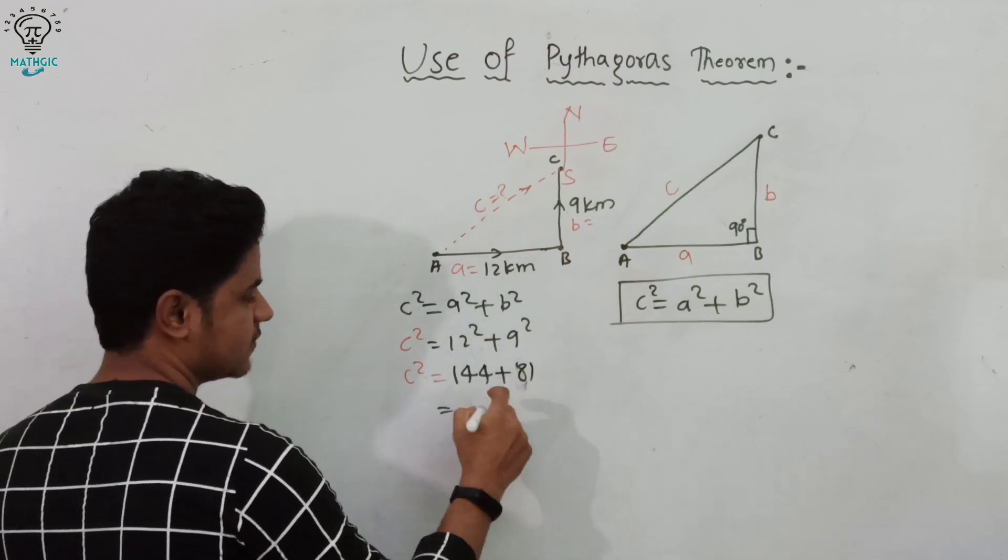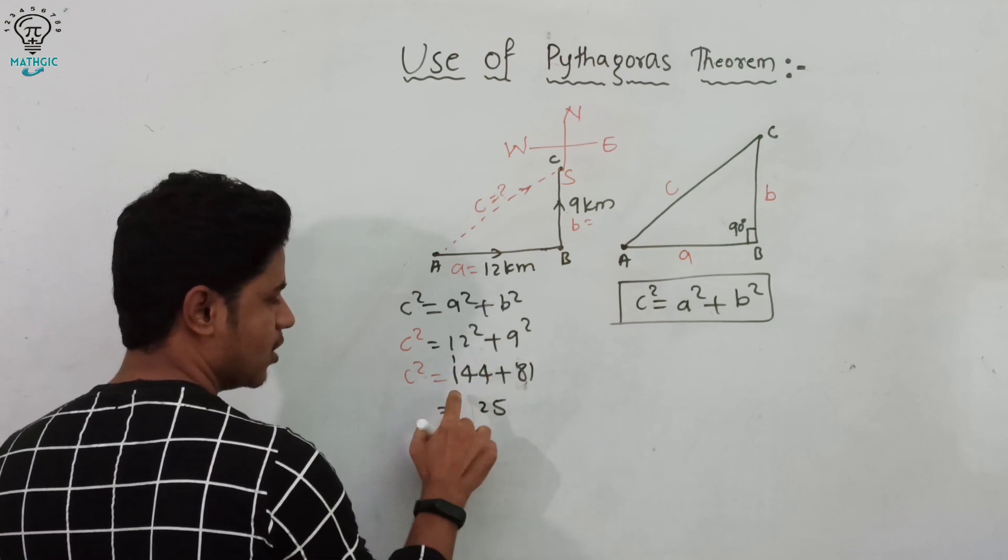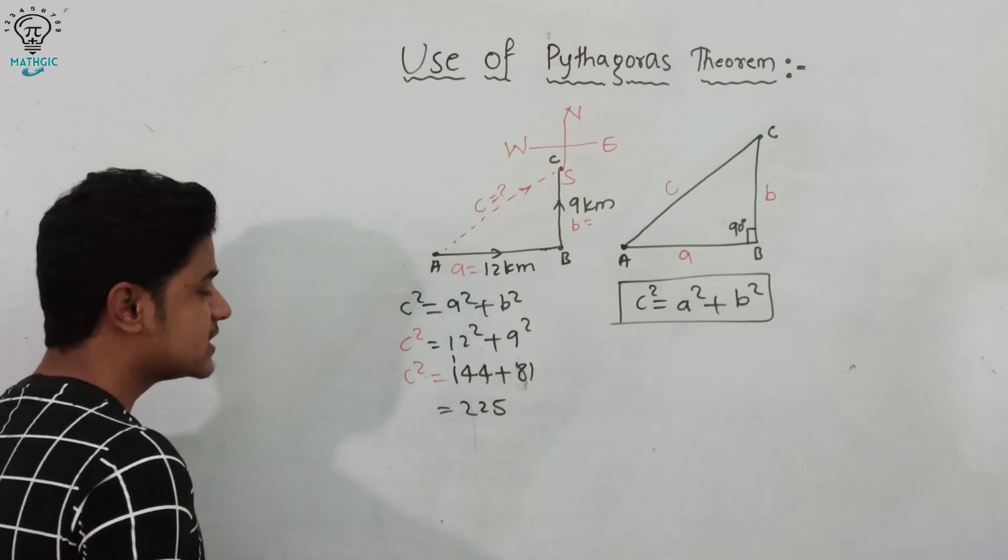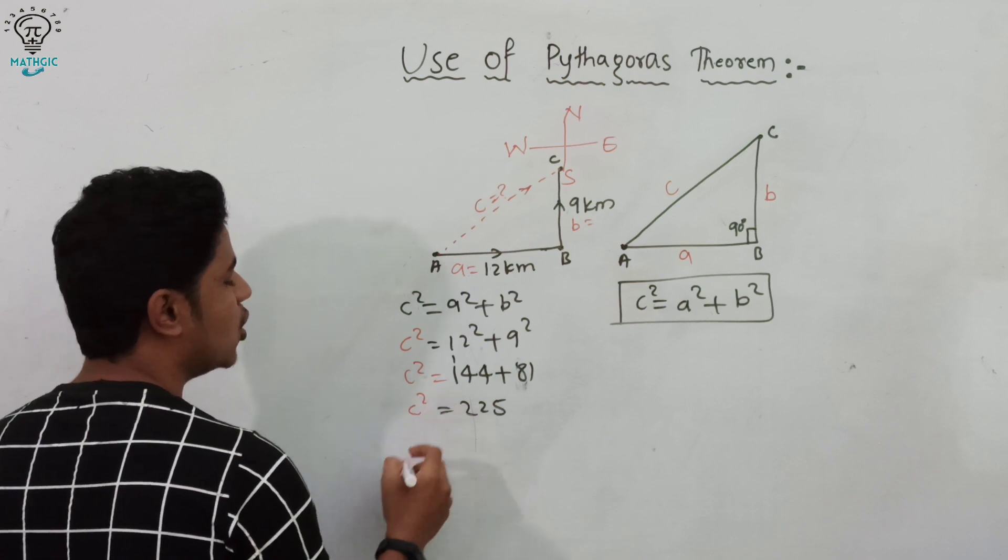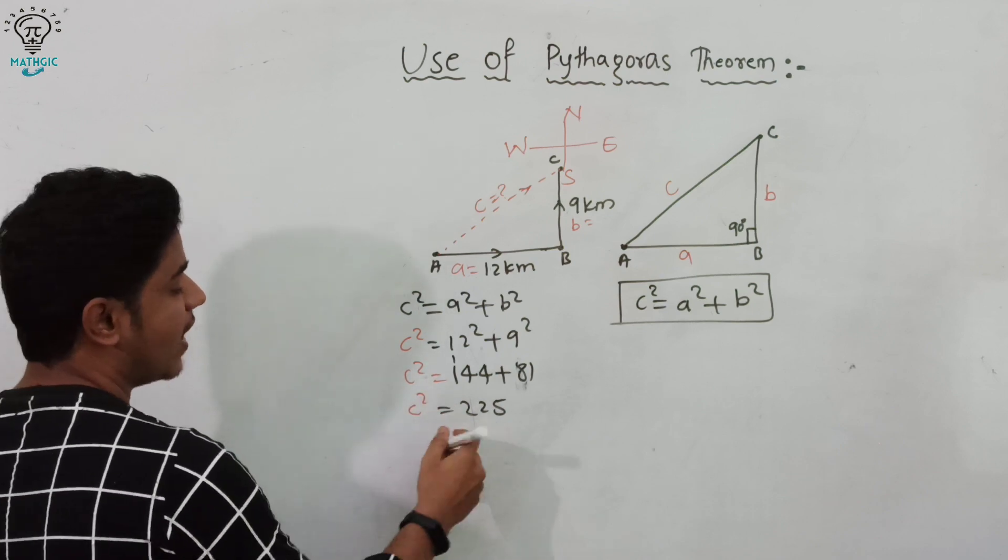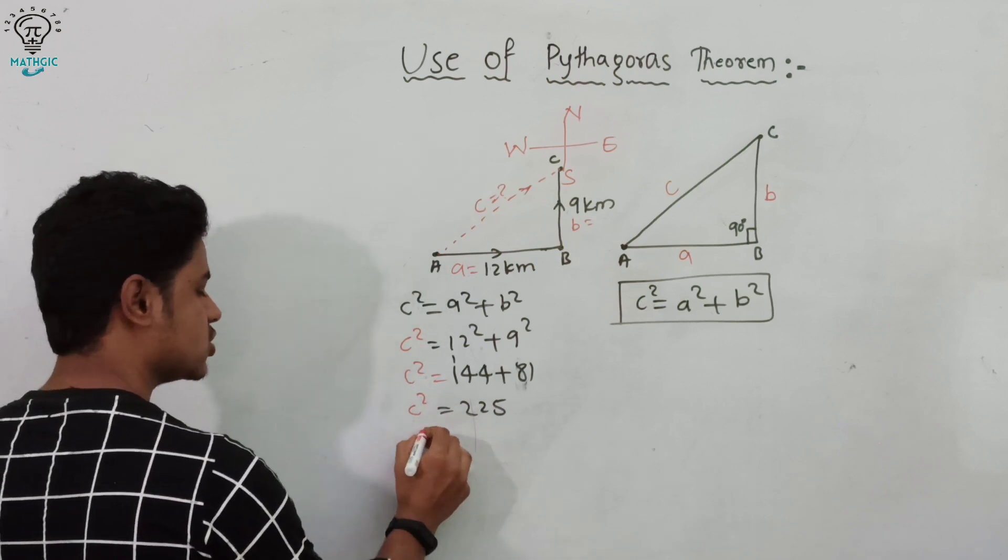Now add both. 1 plus 4 is 5, 8 plus 4 is 12, carry 1, 1 plus 1 is 2. So c² = 225. We have to find c.